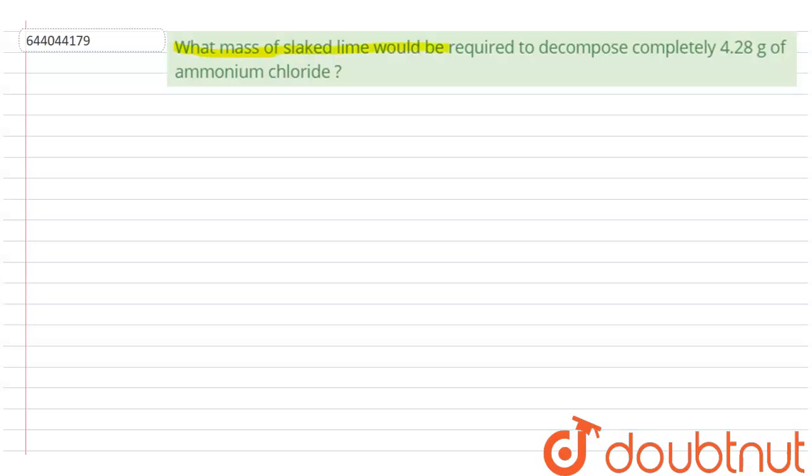The question given here is what mass of slaked lime would be required to decompose completely 4.28 grams of ammonium chloride? So first of all we'll write the reaction of this slaked lime and ammonium chloride. The reaction will be slaked lime, Ca(OH)2, calcium hydroxide, plus ammonium chloride, NH4Cl.